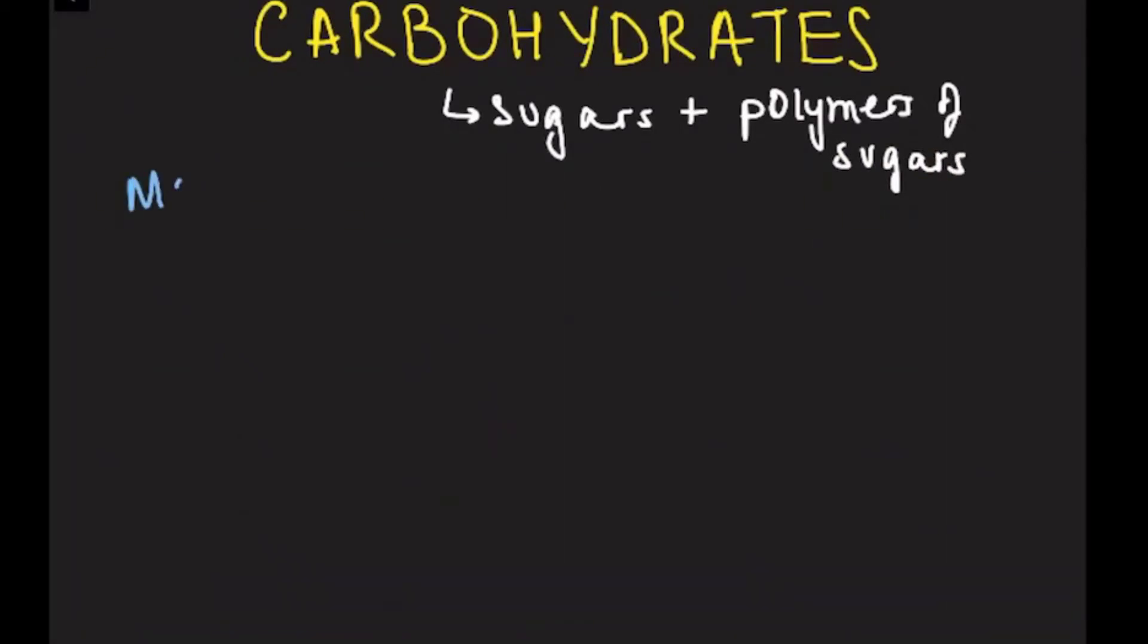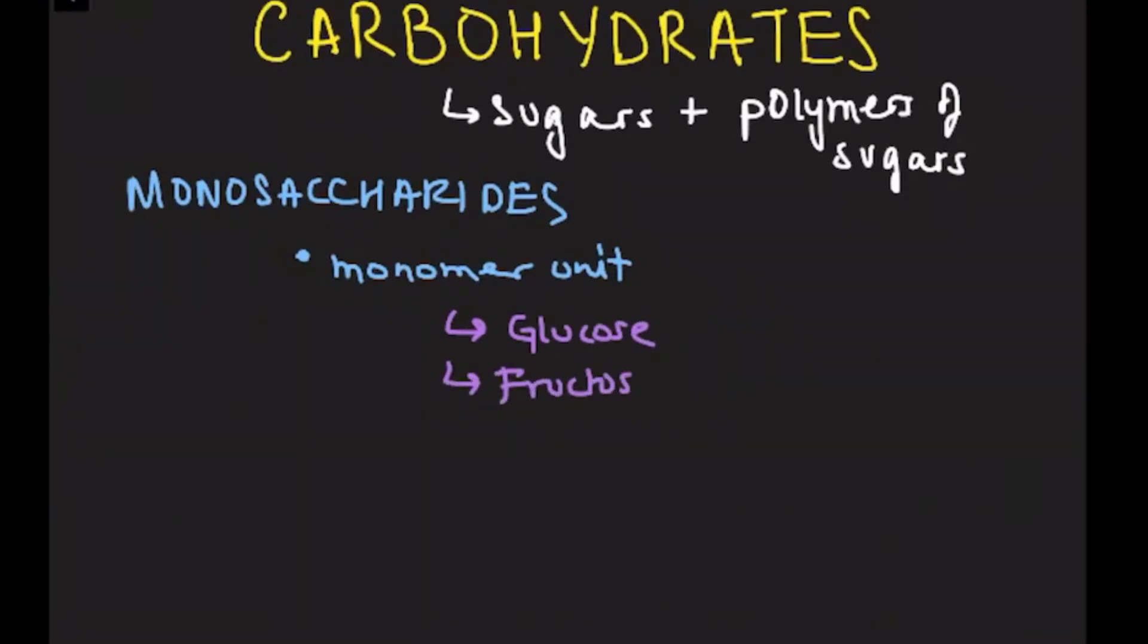Monosaccharides are a type of carbohydrate. They are the simplest sugars. They only consist of one molecule, as indicated by the mono in monosaccharides. These are the monomer units of carbohydrates. A couple of examples of monosaccharides would be glucose, fructose, and galactose. Now, glucose, fructose, and galactose share the same chemical formula, C6H12O6. This makes them isomers.